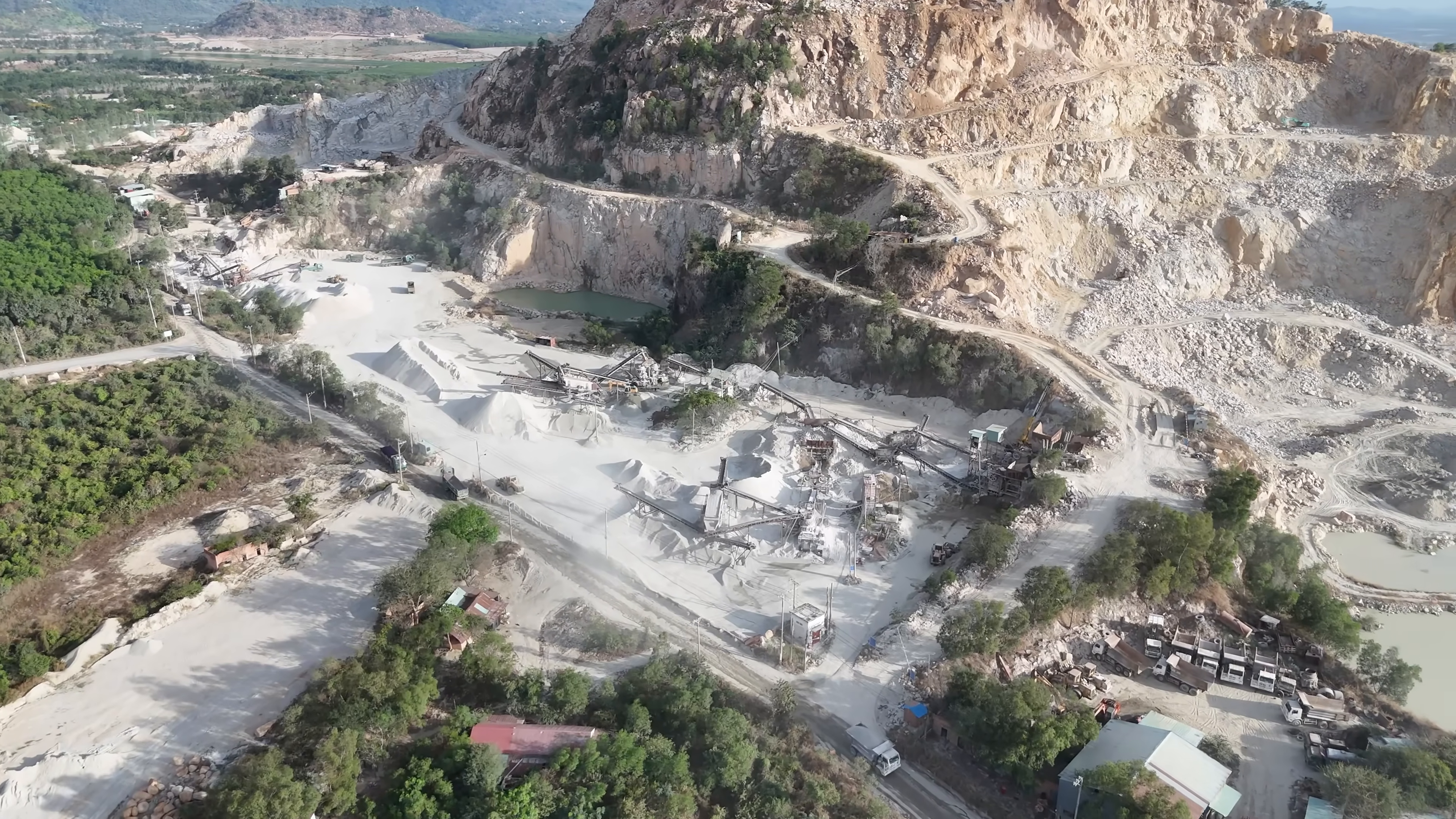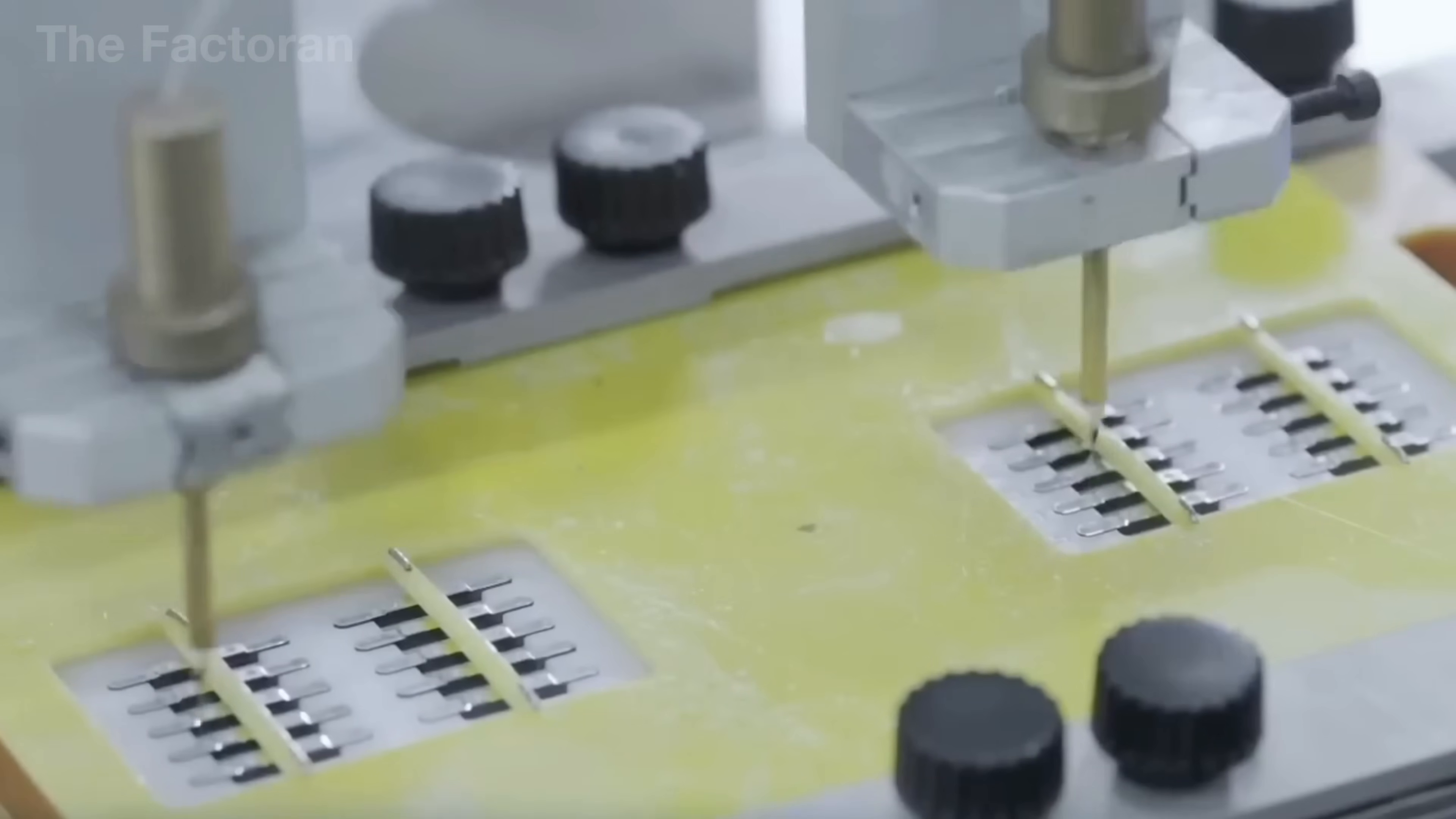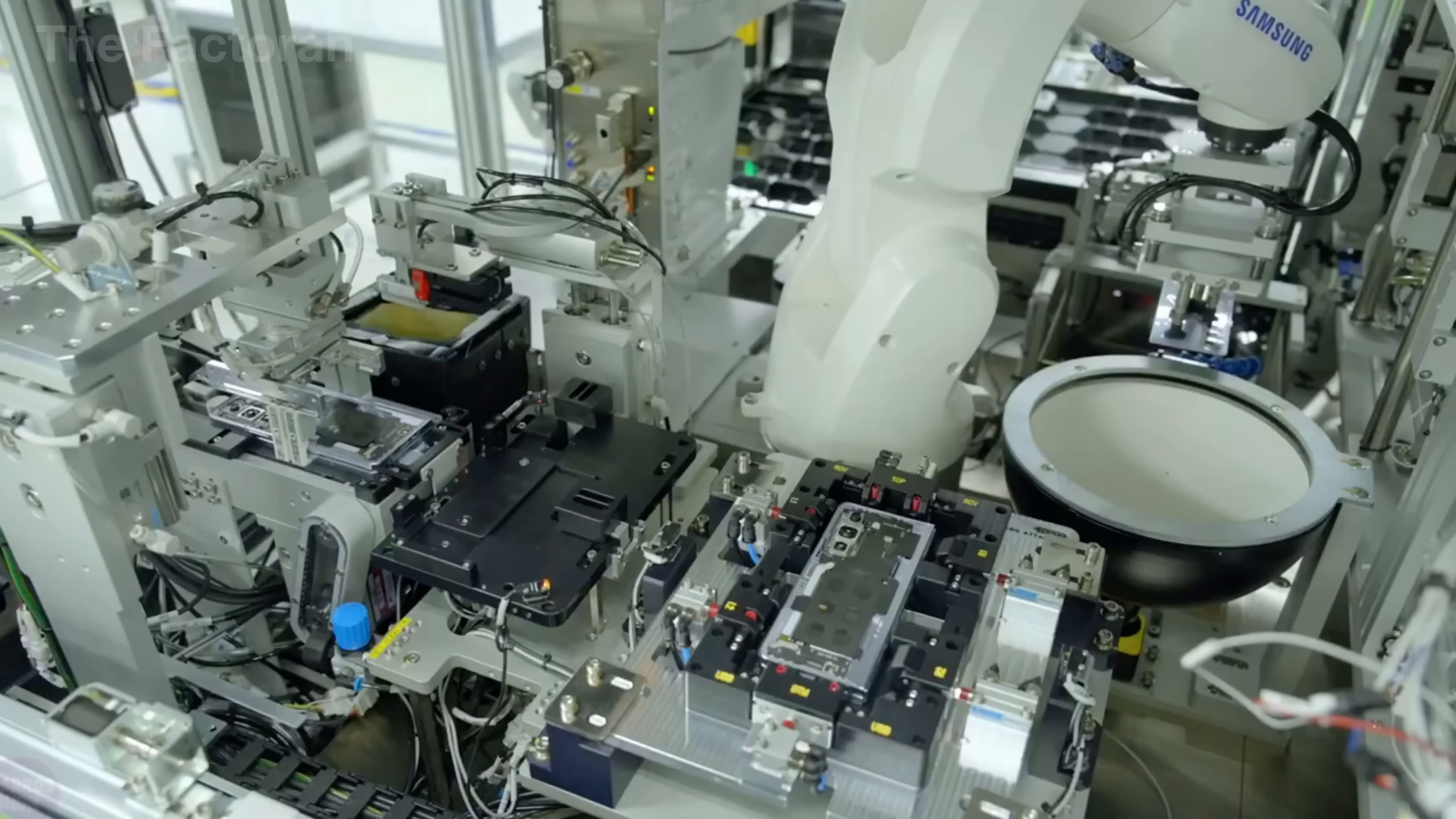From raw aluminum sheets to processors containing billions of transistors, from ultra-thin displays to batteries monitored down to the milliamp, every single iPhone undergoes hundreds of stages of fabrication, inspection, and assembly with near-perfect precision. Behind the sleek exterior that rests in your hand lies an enormous technological ecosystem where robots, clean rooms, and exacting standards operate continuously to produce a device that is stable, durable, and meticulously refined in every detail.